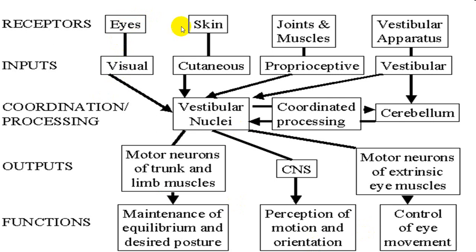Input will be from the eye, skin, joints, muscles, and vestibular apparatus, and they will go to the vestibular nucleus, cerebellum, and then finally give output to motor neurons of the trunk and muscles, which take part in maintenance of equilibrium and posture. It also takes part in perception of motion and orientation, and in what we call vestibular-ocular reflexes.